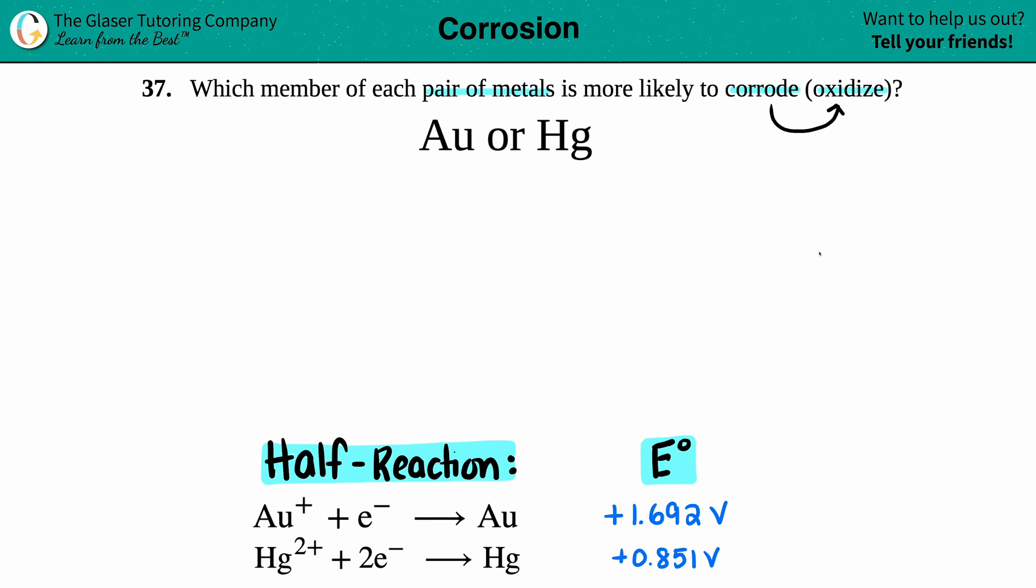So this means that I got to go in the back of the textbook to find out the half reactions of gold and mercury and just write down their cell potentials. So for gold, I have +1.692 volts, and for mercury, I got +0.851 volts.